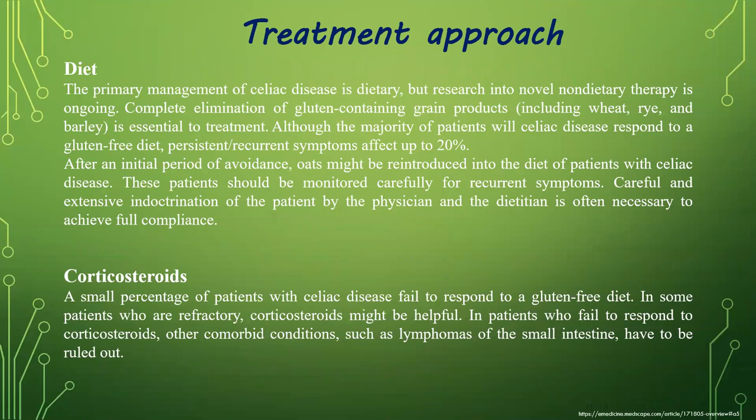The primary management of celiac disease is dietary, but research into non-dietary therapy is ongoing. Complete elimination of gluten-containing grain products is essential to treatment. The majority of patients respond to a gluten-free diet. Persistent or recurrent symptoms affect up to 20 percent of patients after an additional period of avoidance. Oats may be reintroduced into the diet but should be monitored carefully for recurrent symptoms. Close coordination between the physician and dietitian is often necessary to achieve full compliance. A small percentage of patients fail to respond to a gluten-free diet; for these refractory patients, corticosteroids might be helpful. Other conditions such as lymphomas of the small intestine must be ruled out.